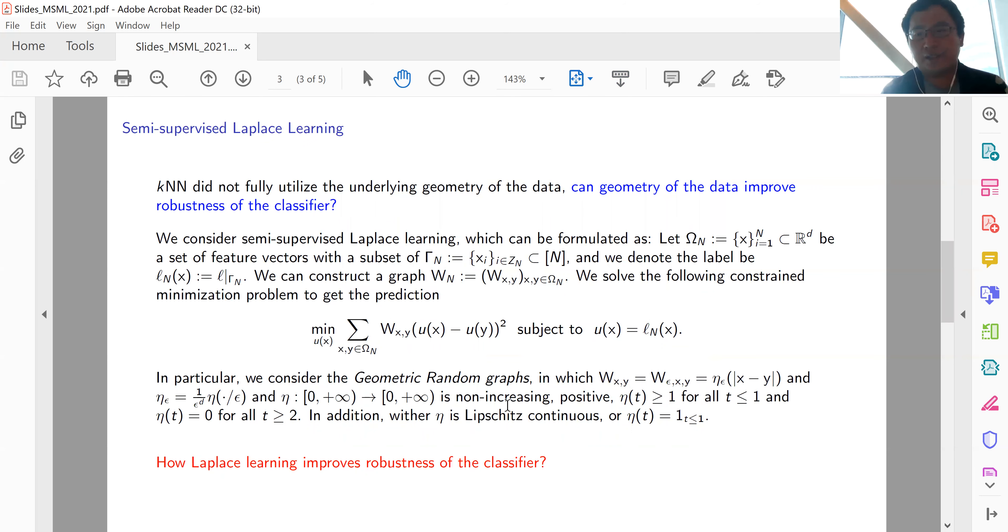One drawback of k-nearest neighbor is that it does not fully utilize the underlying geometry of the data. We want to answer: can geometry of the data improve robustness of the classifier? We consider a special case of semi-supervised Laplace learning. We have a bunch of data points Ω_n, and part of them—a small part Γ_n—are labeled. To get the prediction for the unlabeled data, we minimize a Dirichlet energy subject to the boundary condition u(x) equals the labeled data.